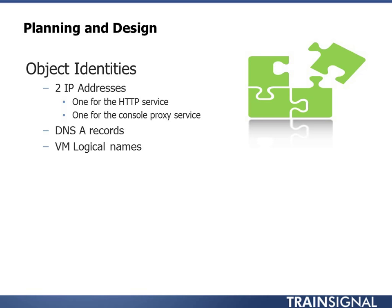For the object identities, we need to create some personality for the server before we install it. We need to figure out what IP addresses we'll be using for the vCloud Director server — one for the web service (HTTP) and one for the console proxy service. The web service is what we connect to when we open our browser, and the console proxy service is what we connect to when we want to open the console for a virtual machine. We'll also want to make DNS A records for both IPs, and determine what the logical name of the VM needs to be.